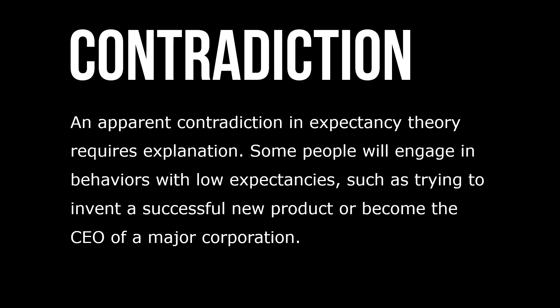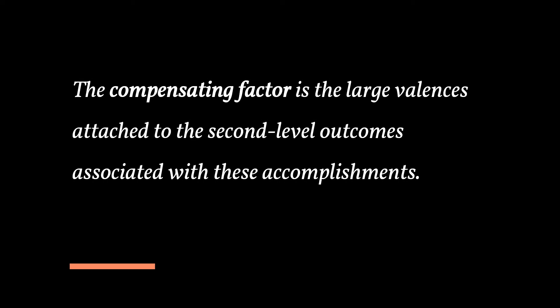An apparent contradiction in expectancy theory requires some explanation. Some people will engage in behaviors with low expectancies, such as trying to invent a successful new product or become the CEO of a major corporation. The compensating factor is the large valences attached to the second-level outcomes associated with these accomplishments.